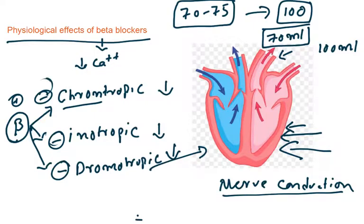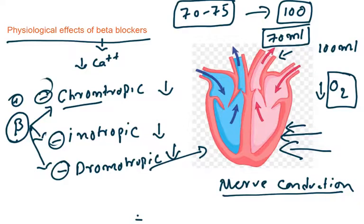If heart rate and force of contraction are reduced, the oxygen demand on the heart is reduced. When oxygen demand is reduced, you are essentially treating angina pectoris.